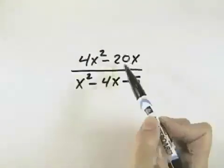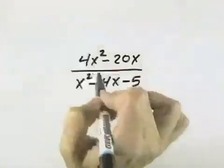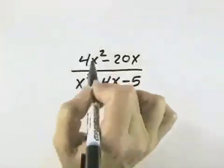Right now, we have two separate terms on top and three on the bottom, but those are not factors. Factors are connected by multiplication. So in order to simplify, we need to try to factor each of these.